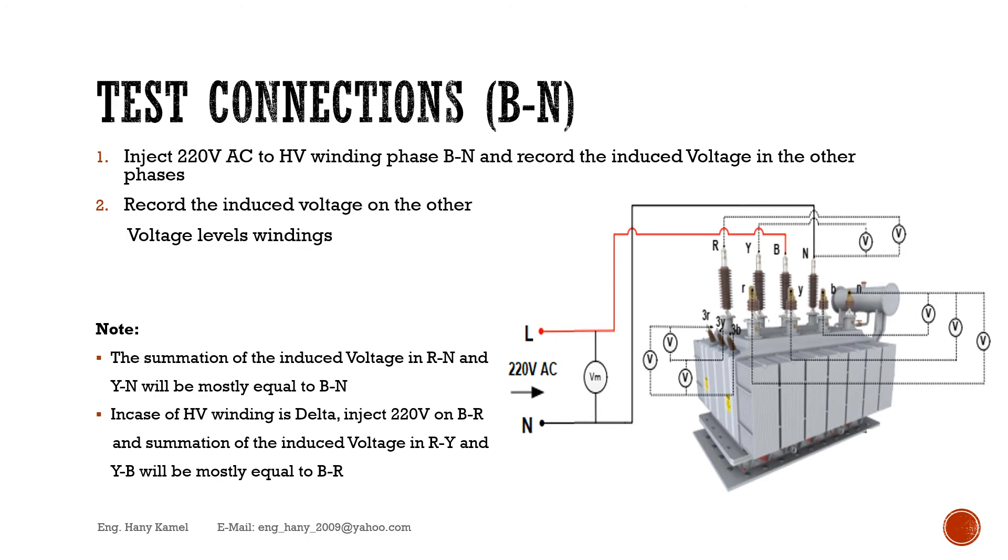Inject 220 volt to HV winding phase B-N and record the induced voltage in the other phases. Record the induced voltage on the other voltage level windings. Note: The summation of the induced voltage in R-N and Y-N will be mostly equal to B-N.